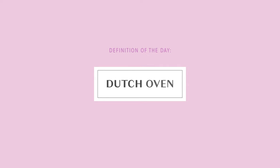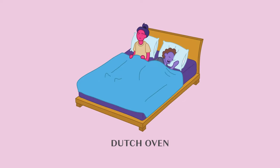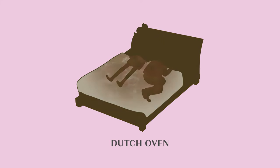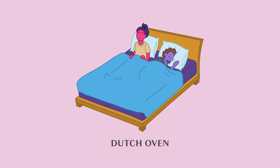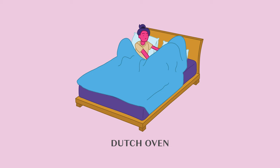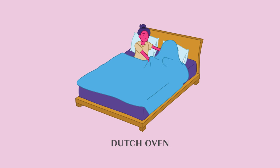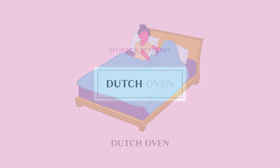Today's definition of the day is Dutch oven. A Dutch oven is when you release a fart under the blanket and then, after the poo particles spread out evenly, you trap your partner underneath so that he or she can only inhale the toxic fumes from your dirty butthole. Dutch oven.